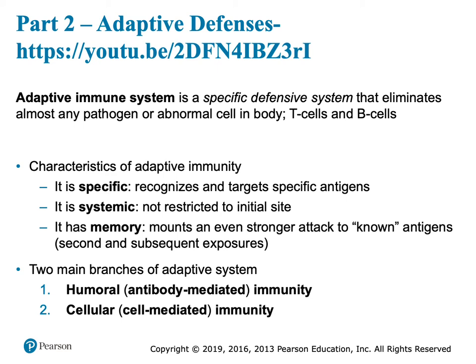The second line of defense includes certain cells like phagocytes, natural killer cells. Macrophages and neutrophils are the phagocytes — they go and gobble up pathogens. Natural killer cells are a really weird type of lymphocyte. They constantly patrol, very nonspecifically. They recognize if a cell is missing something wrong with that cell's glycocalyx — and we're going to talk about that in this PowerPoint.